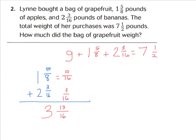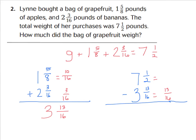Now, when we subtract this value from the total, that'll give us what the grapefruit equals. So let's do seven and one-half minus three and thirteen-sixteenths. If you want to pause the video and work this one out on your own, you can, or just do it along with me. I'm going to keep thirteen-sixteenths as is and convert one-half to eight-sixteenths.